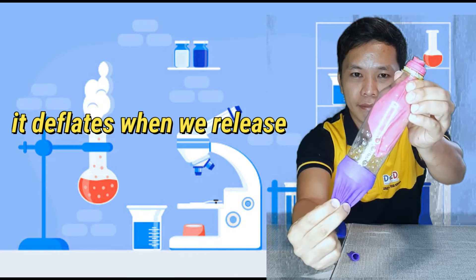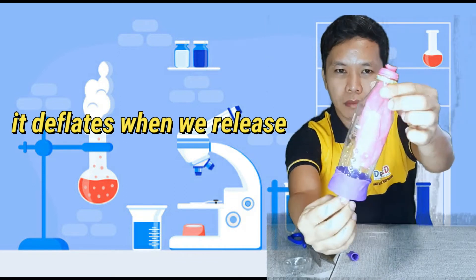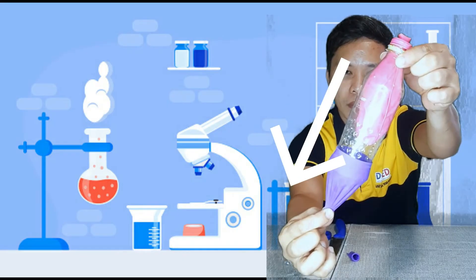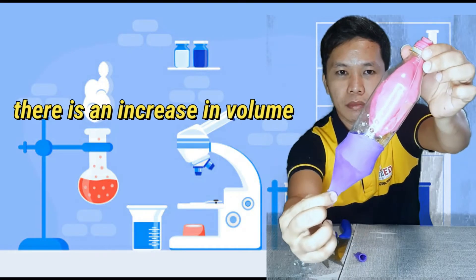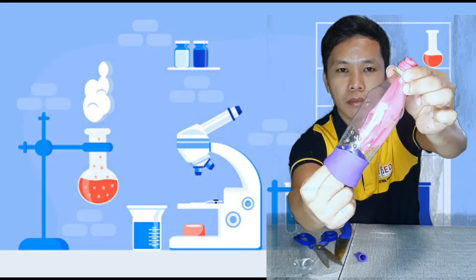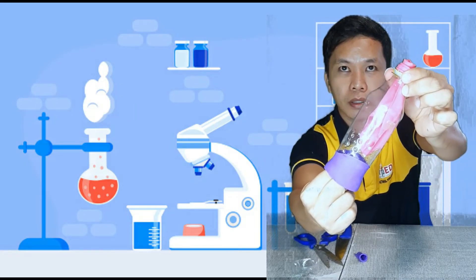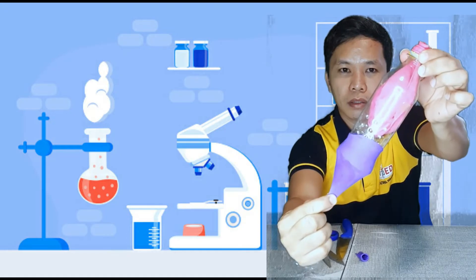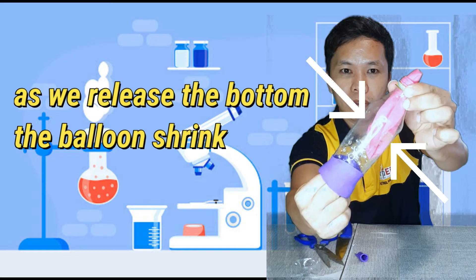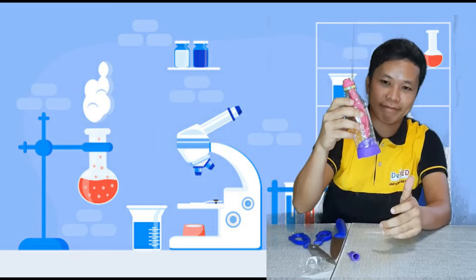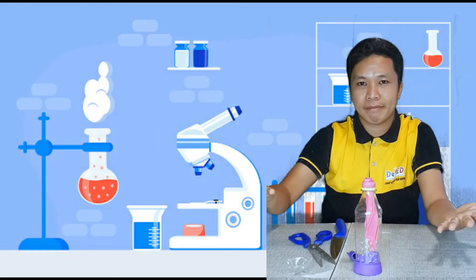This explains the concept of Boyle's Law. As we pull the bottom, there is an increase in volume inside the plastic bottle, and the pressure inside the plastic bottle is decreased because the balloon on top is inflated. And as we release the bottom, the balloon on top shrinks due to the increase in pressure inside the plastic bottle.